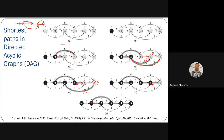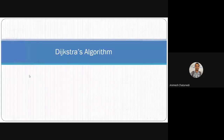Final shortest distances in the DAG: d[t]=2, d[x]=6, d[y]=5, d[z]=3. Node r remains unreachable. This is how shortest path is computed in a directed acyclic graph. Next class will cover Dijkstra's algorithm.